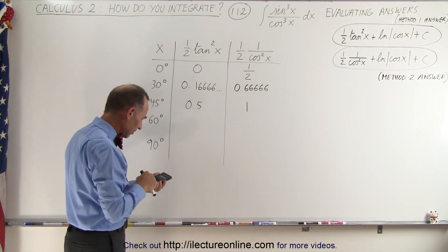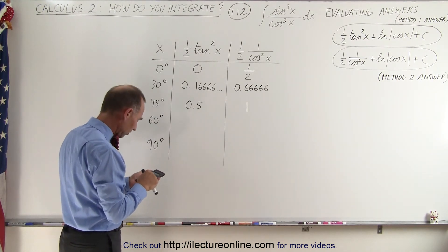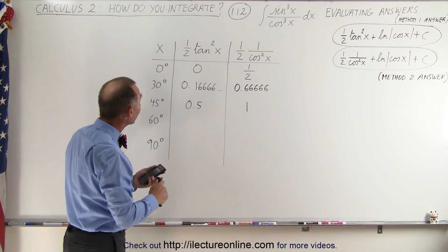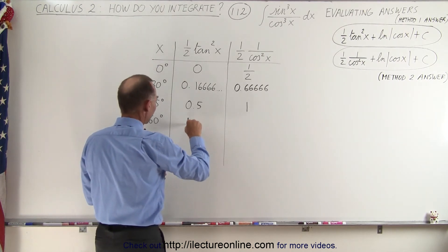So let's try this: 60 degrees, the tangent of 60, and then we square that, and times 0.5, that would be 1.5.